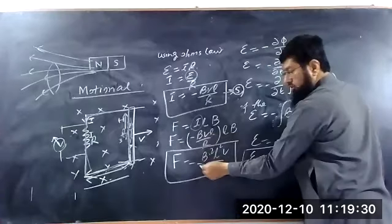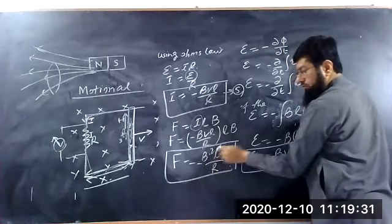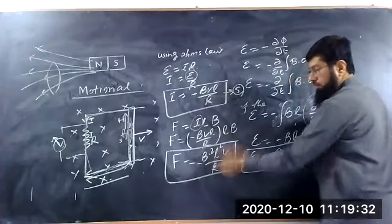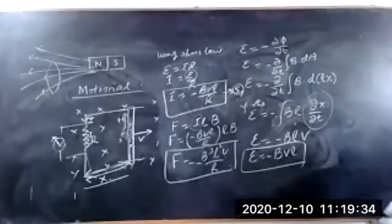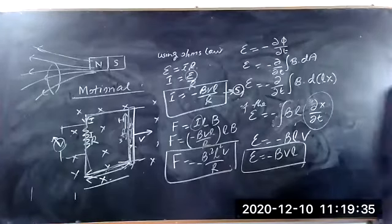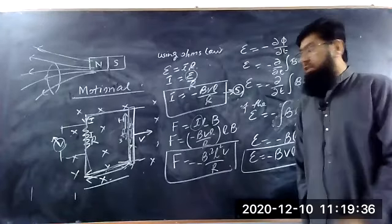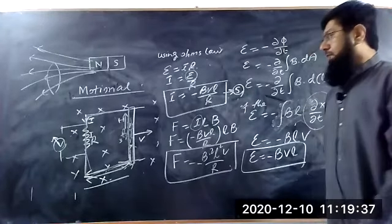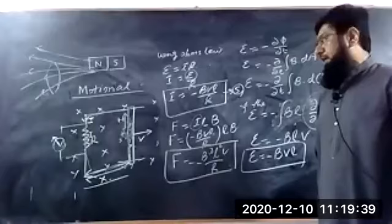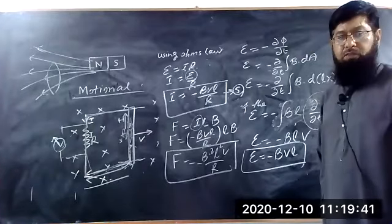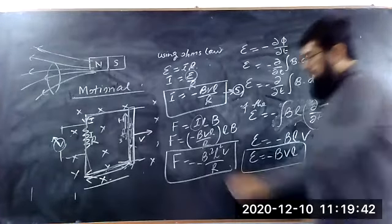So the force is equal to minus B squared L squared V upon R. This is the force experienced by the wire when it is carrying current I in the magnetic field.